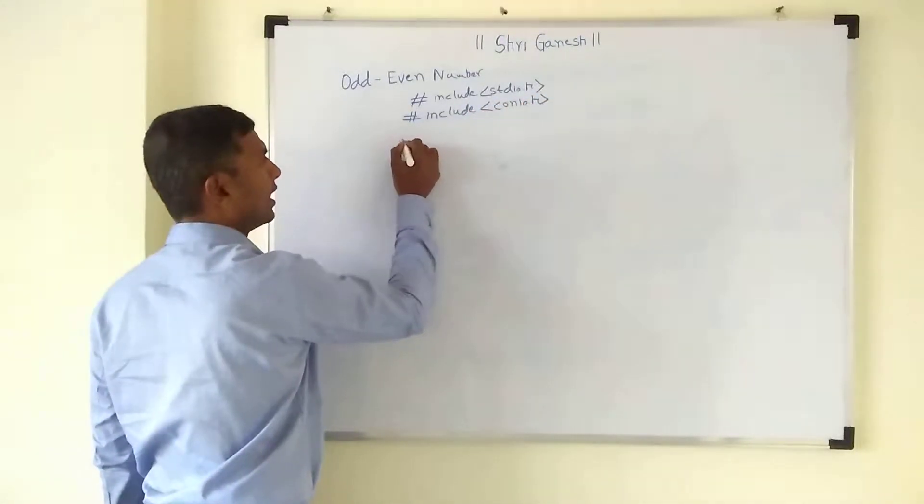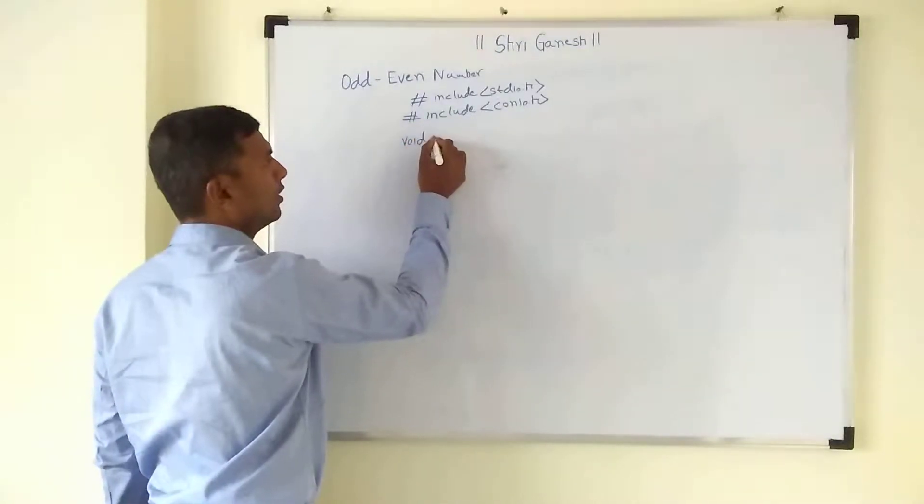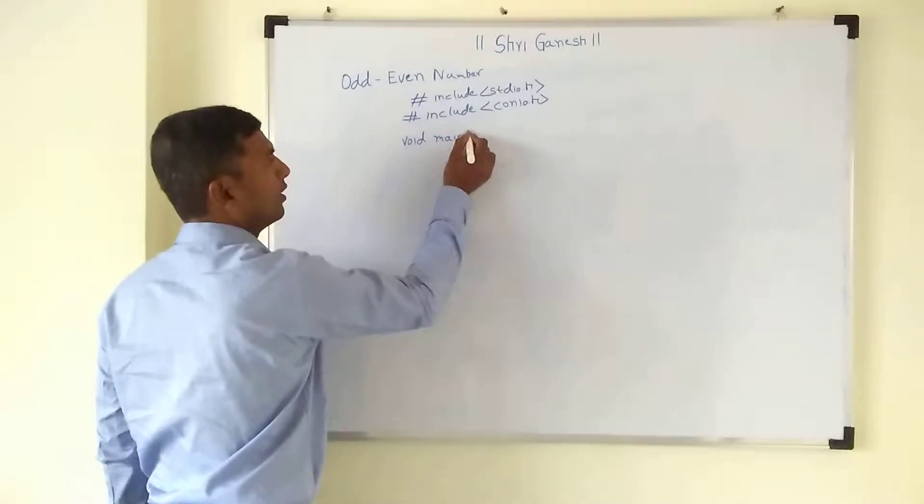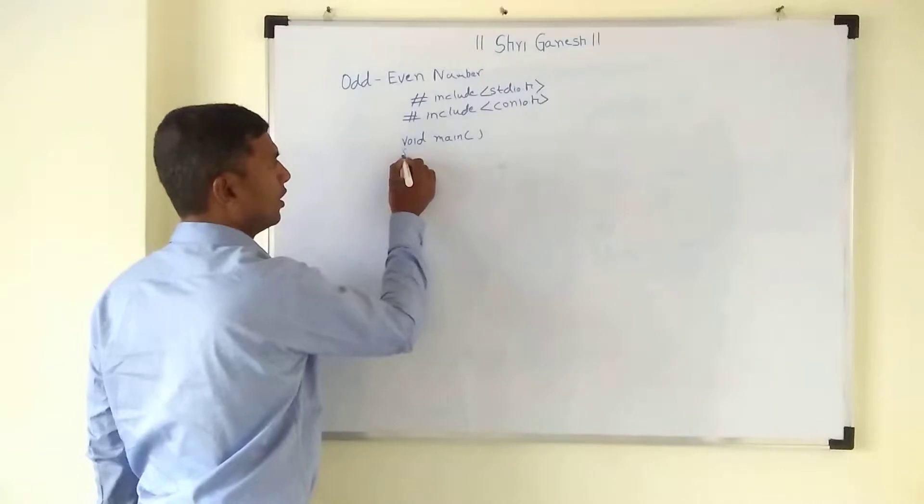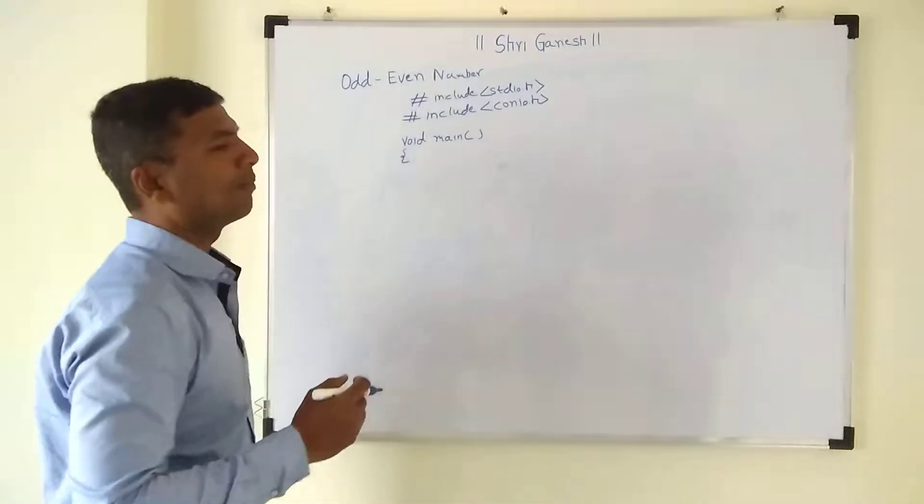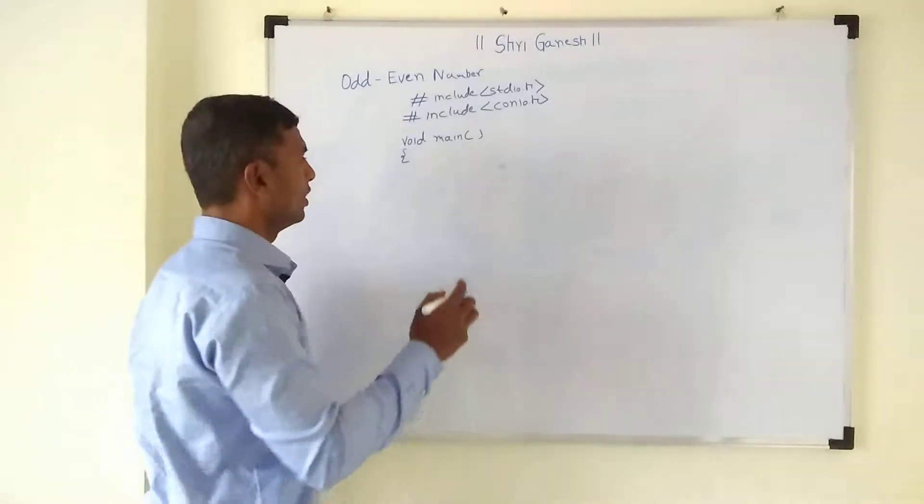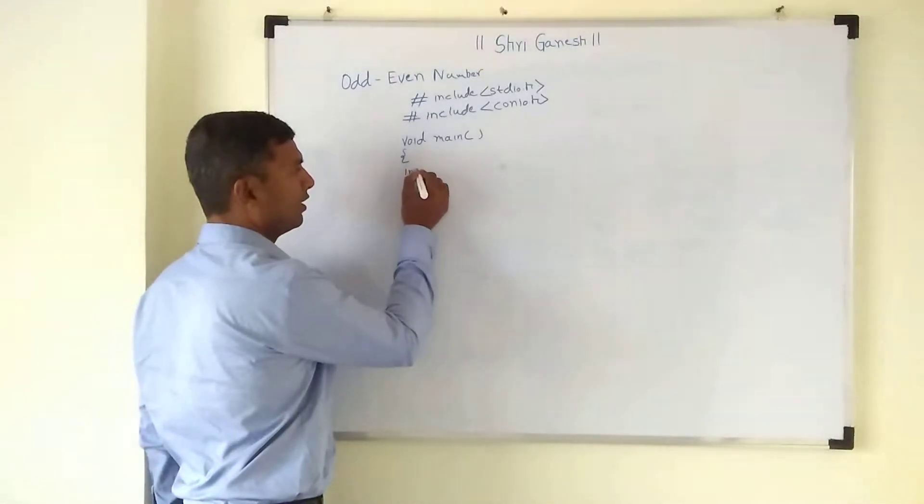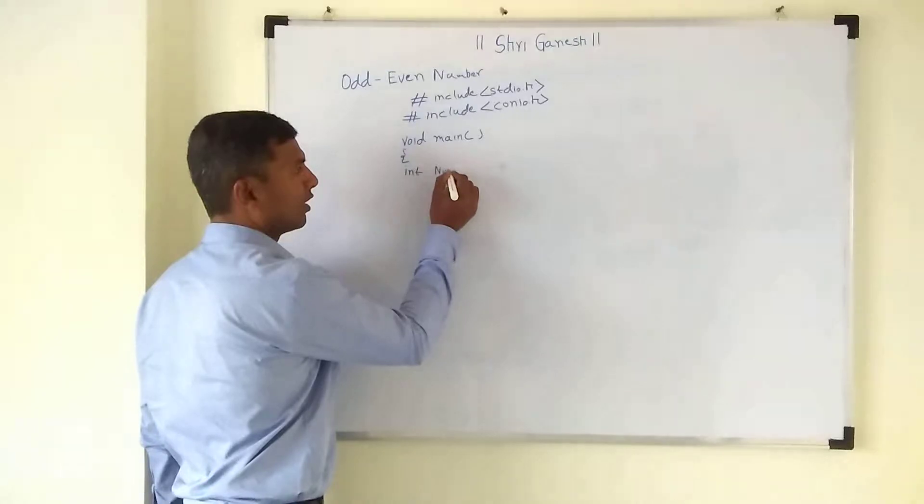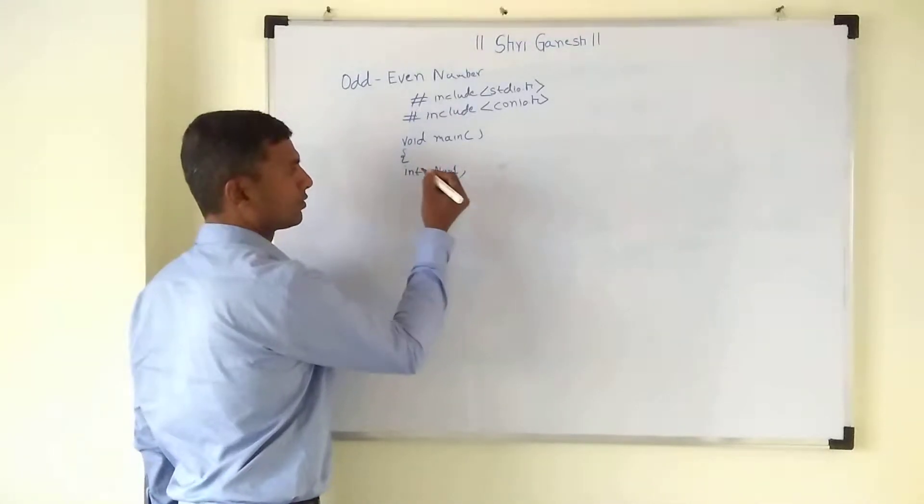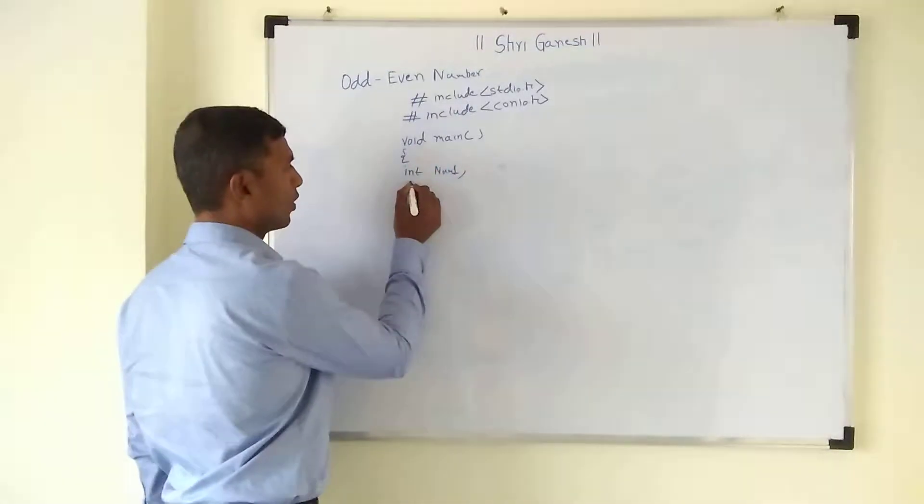Then we will declare the main function, void main. Now for this program we need one variable, one integer type of variable. So I will declare here int num1. Then as we know, clear screen.